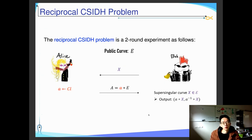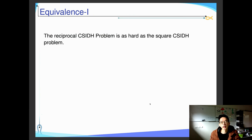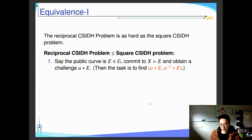Next, we introduce a new assumption called the reciprocal CSIDH problem. This is a two-round experiment defined as follows. There is a public curve E, and two parties — a challenger and an adversary. The adversary sends a curve to the challenger first, and the challenger sends [A]E to the adversary. The adversary's task is to find both [A]E and [A^{-1}]E. The reciprocal CSIDH problem looks a bit unusual, but it is as hard as the square CSIDH problem.